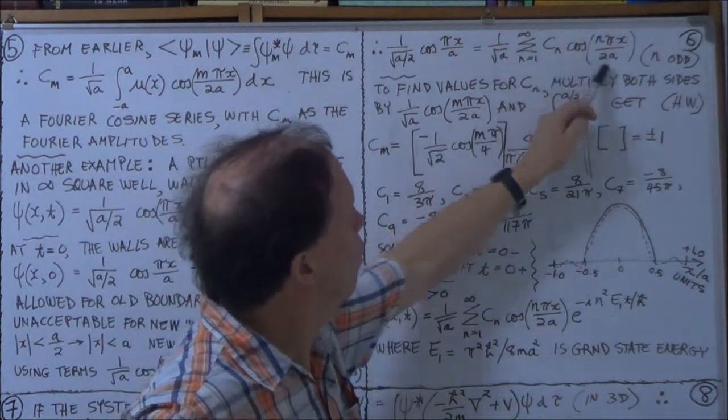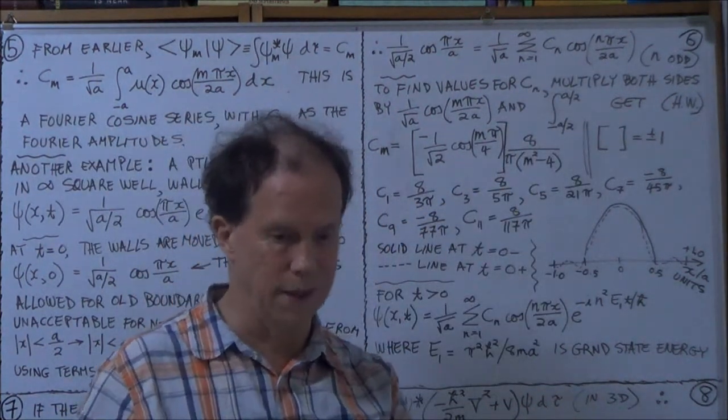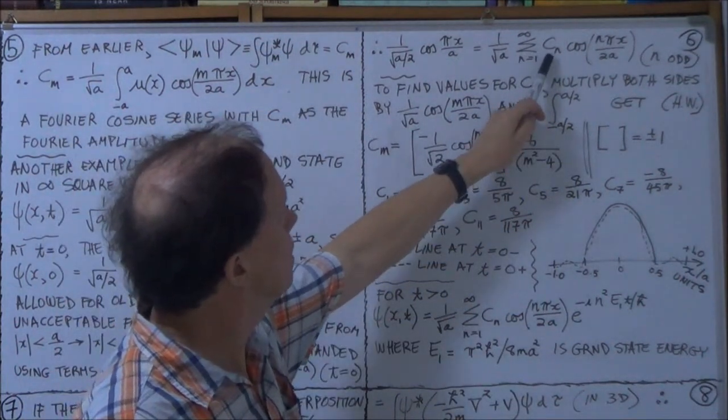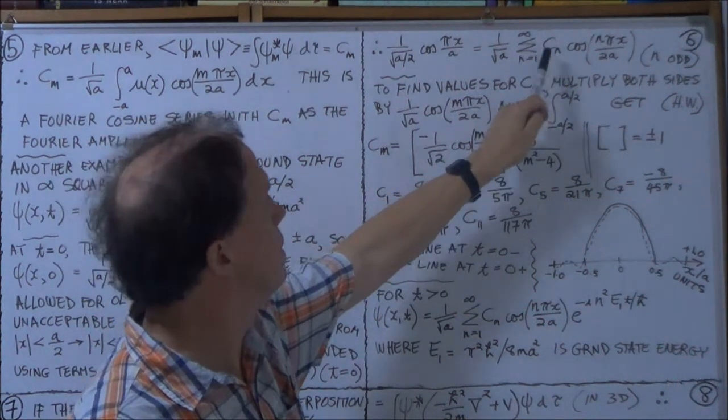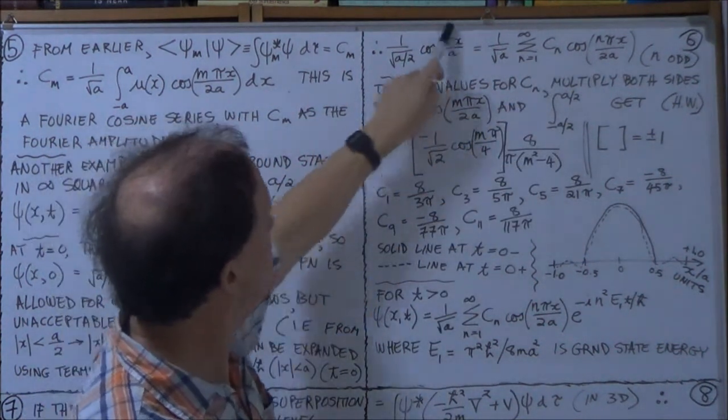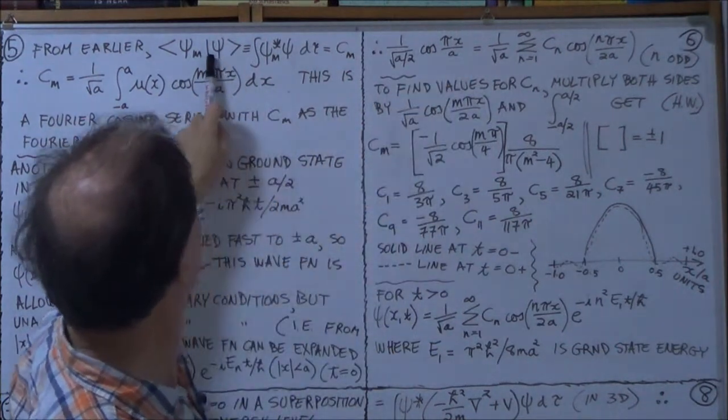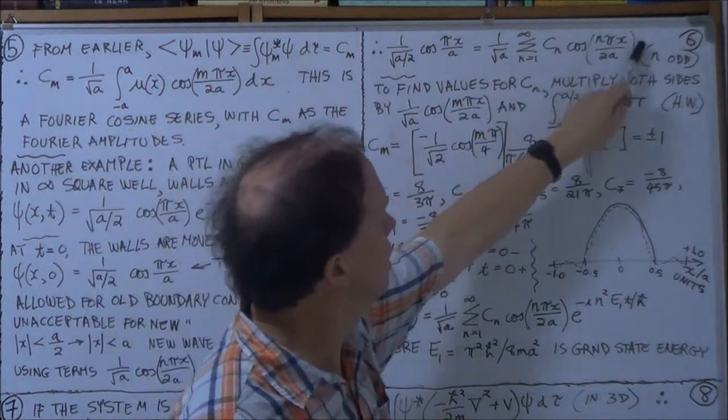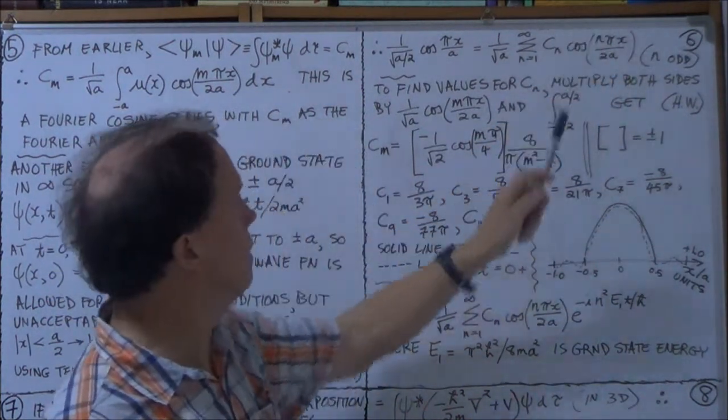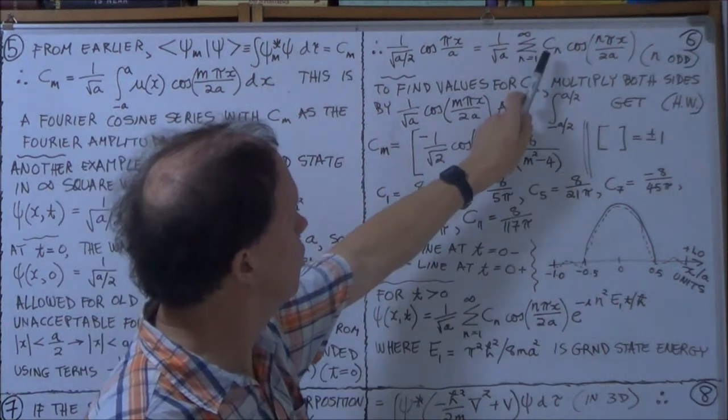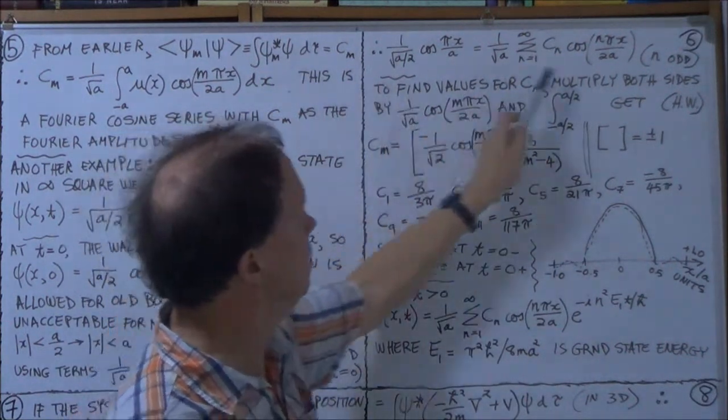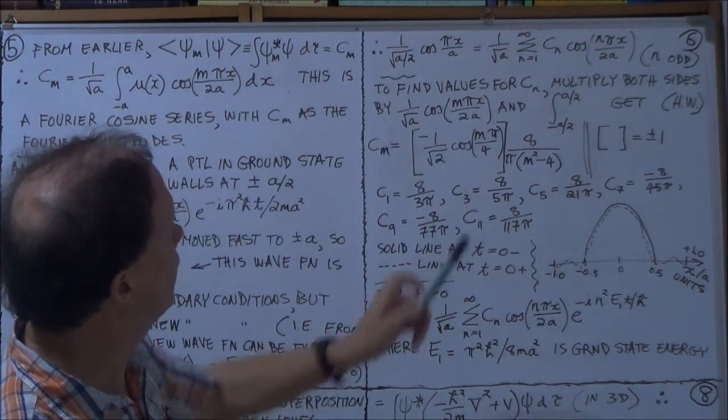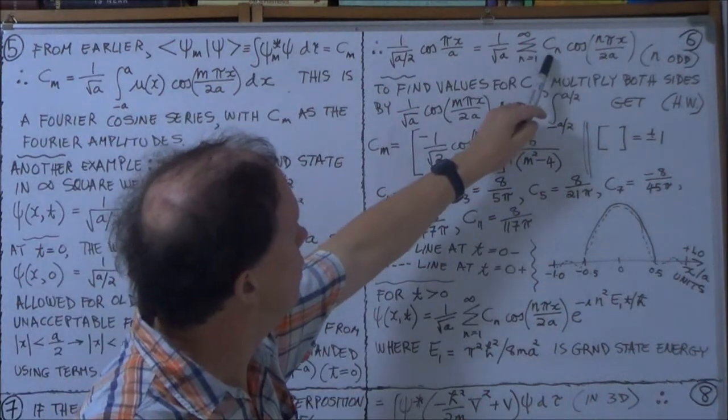So these are the appropriate basis states for that new circumstance when the width is 2a. And we're trying to find what these coefficients, these c's are. So that's the equivalent of our psi, our general wave function. And these here are our basis states. We're trying to find what these coefficients are such that the left hand side equals the right hand side.